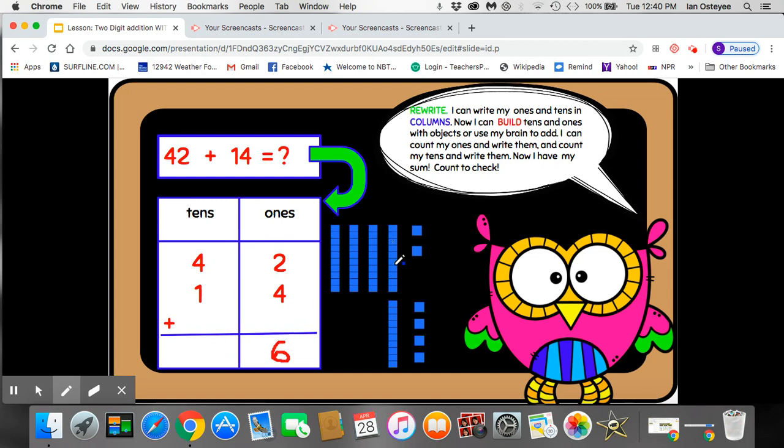One, two, three, four, five. I have five groups of ten, which you guys know equals 50. So let me read my sum, my problem. I wrote 42 plus 14 and I found the sum is 56. I want to count my objects to make sure that's correct.